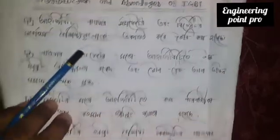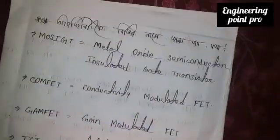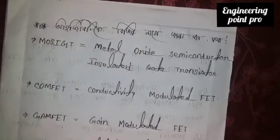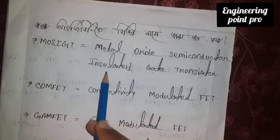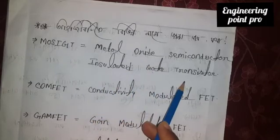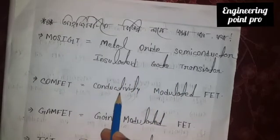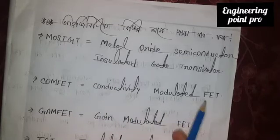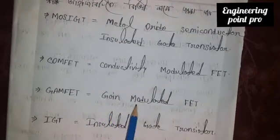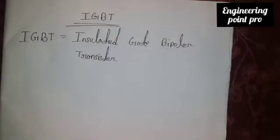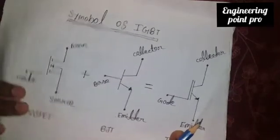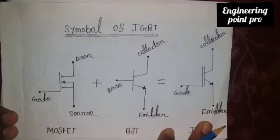What is the name IGBT? The first one is Metal Oxide Semiconductor Insulated Gate Transistor. Conductivity modulated effect, gain modulated effect. Insulated Gate Transistor.